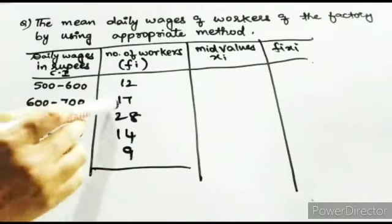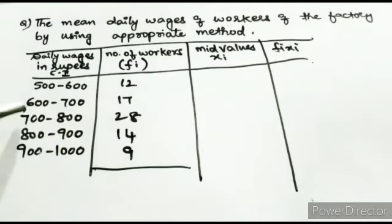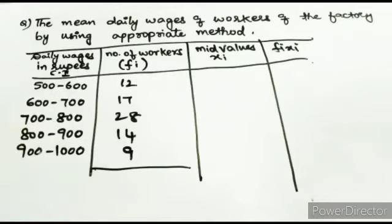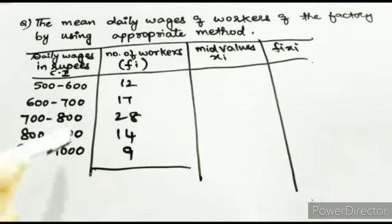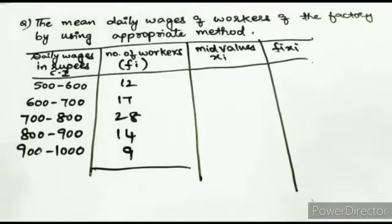17 workers earn wages from 600 to 700 rupees. 28 workers earn wages from 700 to 800 rupees. 14 workers earn wages from 800 to 900 rupees. And 9 workers earn wages from 900 to 1000 rupees. Whenever you have class intervals, you must compulsorily find out the mid values.